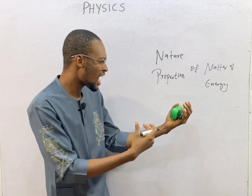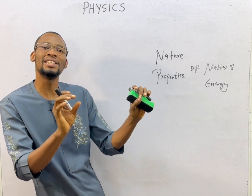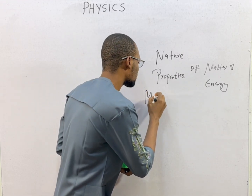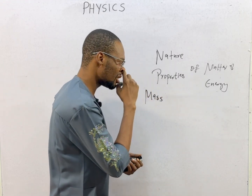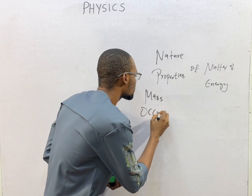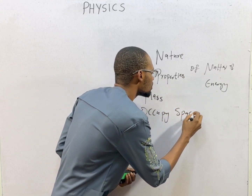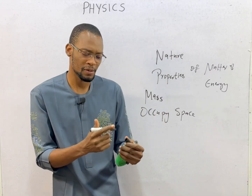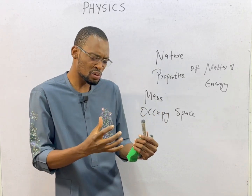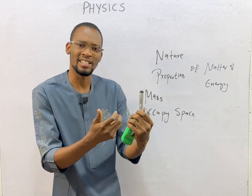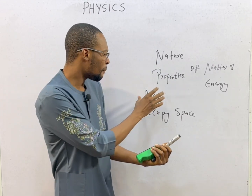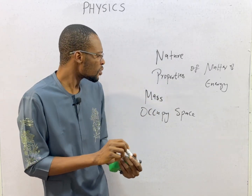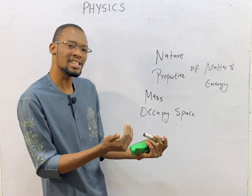Now let's see how matter and energy relate or how they are defined. Matter is anything that has mass and as well occupies space. This is matter. If you have anything, so long it has mass and it occupies space — mass refers to how much substance, how much material is in an object, in other words the quantity of matter in an object — so if something has mass and occupies space, we say this is matter.